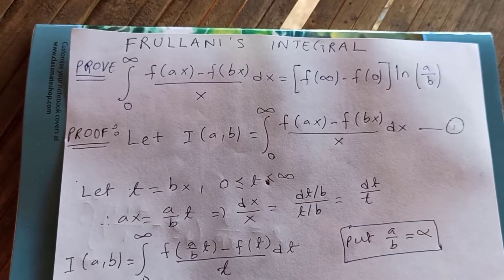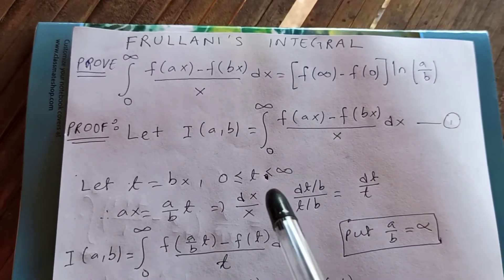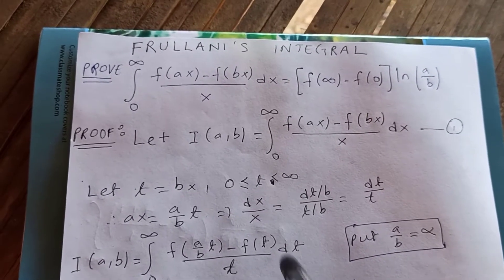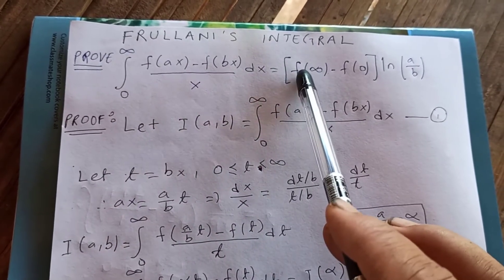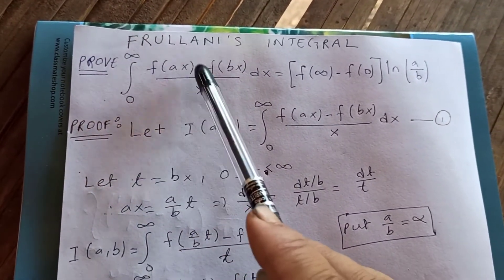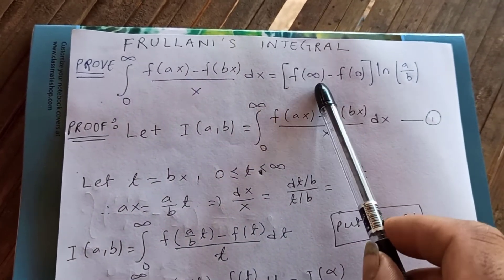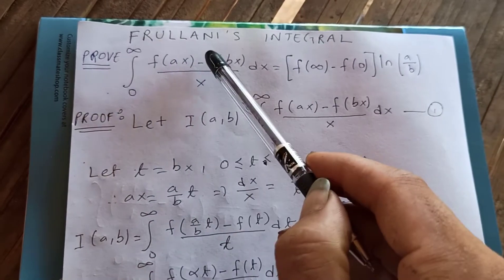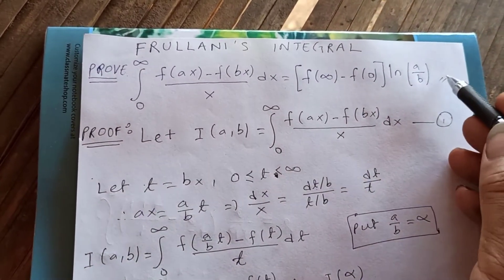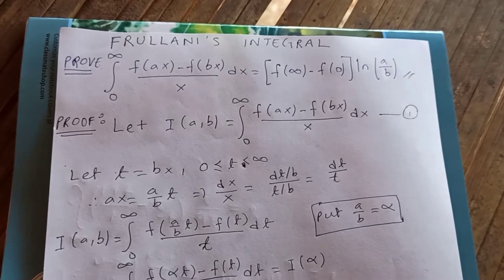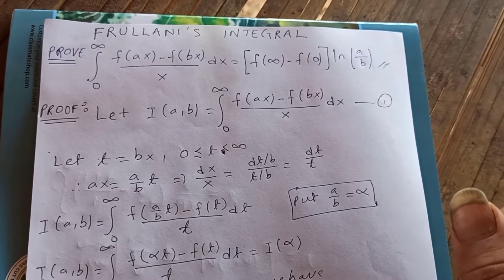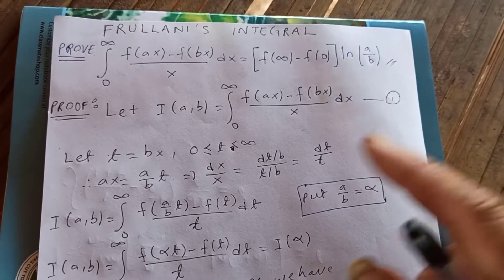Let's look at another integral called the Frullani integral. The Frullani integral is the integral from 0 to infinity of [f(ax) - f(bx)] / x dx, which equals [f(∞) - f(0)] times the natural log of a over b. This can be proved in many ways.